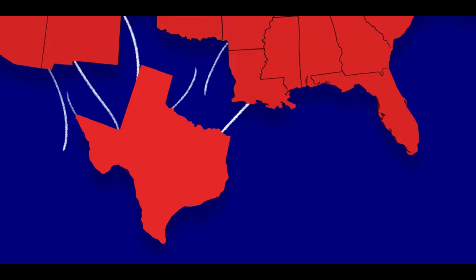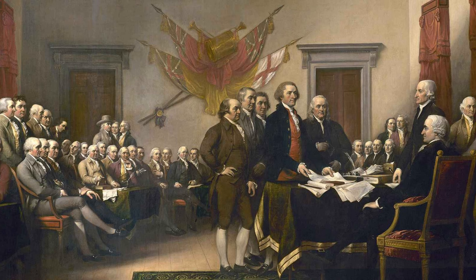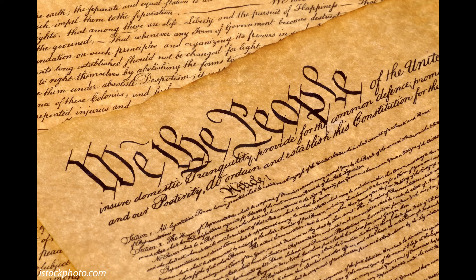Moreover, they wished to avoid a war with Mexico, whose government had outlawed slavery and refused to acknowledge the sovereignty of its rebellious northern province. With Texas's economic fortunes declining by the early 1840s, the president of the Texas Republic, Sam Houston, arranged talks with Mexico to explore the possibility of securing official recognition of independence, with the United Kingdom mediating.